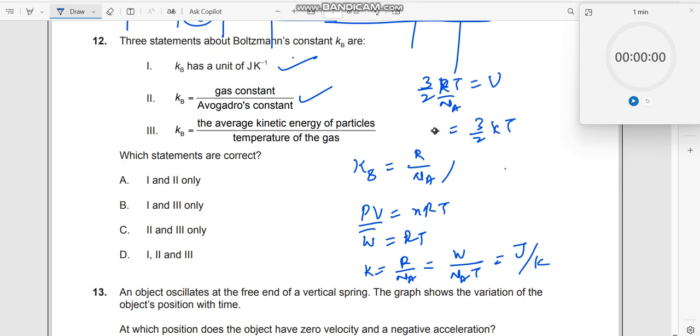3/2 kT is your average kinetic energy. Now if I divide this by temperature, this will be 3/2 k. If I take all three dimensions, if I take only one dimension, it's half kT. So therefore this is not equal to it, so this is incorrect. So only one and two are correct.